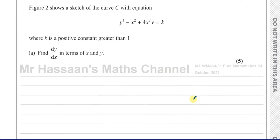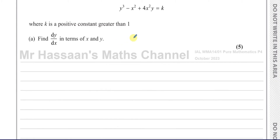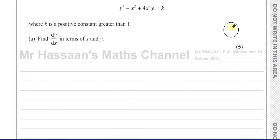Part (a): find dy/dx in terms of x and y. This is about implicit differentiation — we have to find dy/dx. A lot of people see this and say we need to make it say y equals something first, but this equation is not given explicitly as y as a function of x. You have y cubes and x squares and you can't easily make y the subject.